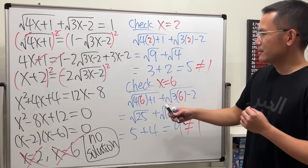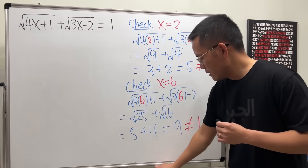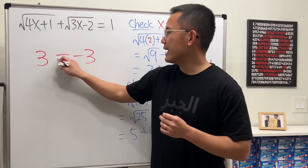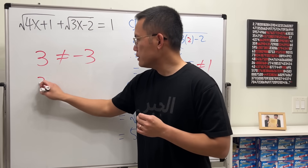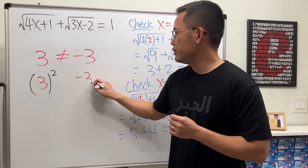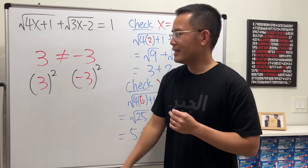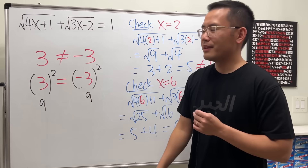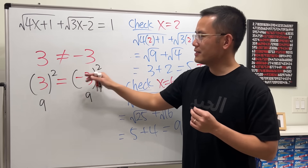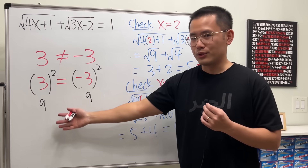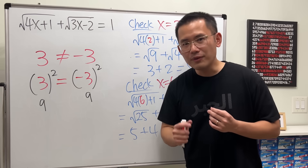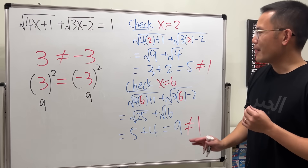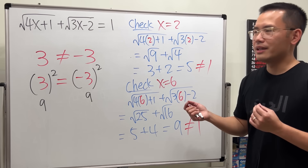Here's an example of why: take 3 and negative 3 — of course they are not equal. But if I square 3, I get 9, and if I square negative 3, I also get 9. So they happen to be the same after squaring. You cannot start with something that's false, do something to it, and end up with a true statement. So be careful — squaring both sides can introduce extraneous solutions.